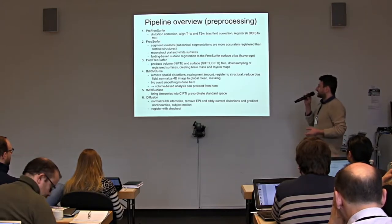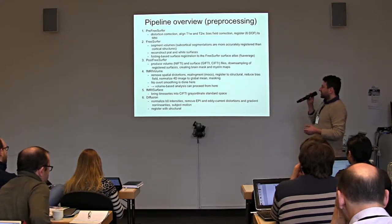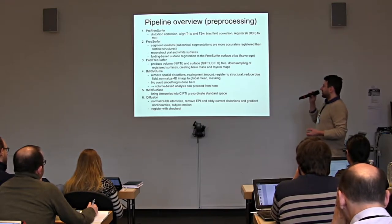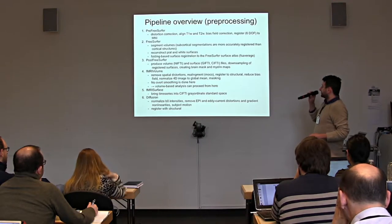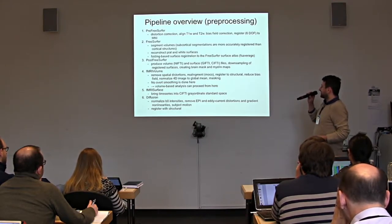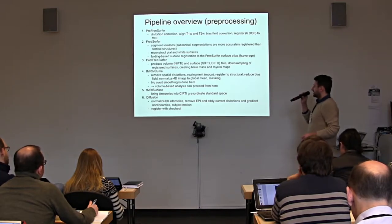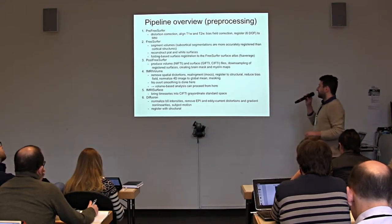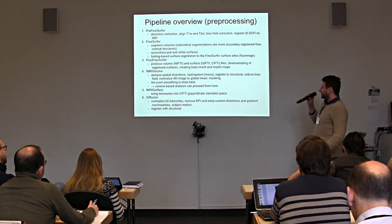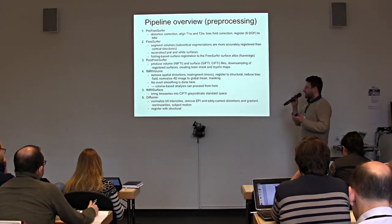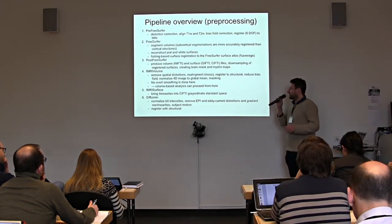The Human Connectome Project brought about a more functional registration — this is why we don't use the default FreeSurfer cortical parcellations. We reconstruct the surfaces, map them to a standard surface template, and after FreeSurfer we produce image file formats, downsample them, and create brain masks and myelin maps. For fMRI volume we do similar steps: remove distortions, do motion correction, register to the structural, reduce bias field, normalize to global intensity mean, mask the image, and do no smoothing at this stage.